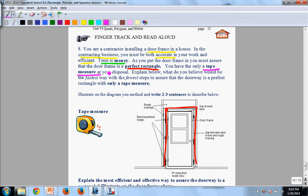You only have a tape measure at your disposal, nothing else. Explained below, what would be the fastest way with the fewest steps to assure the doorway is a perfect rectangle, that's your goal, using only a tape measure.